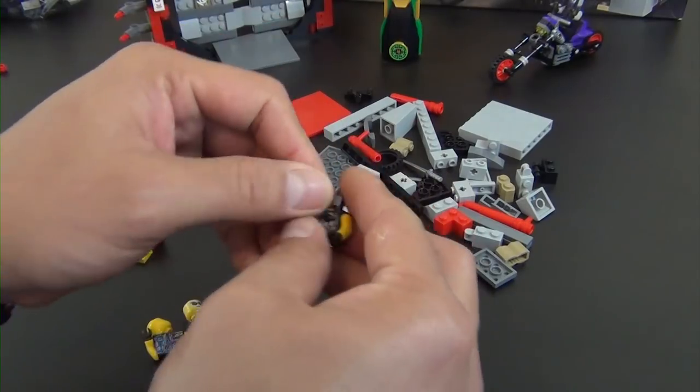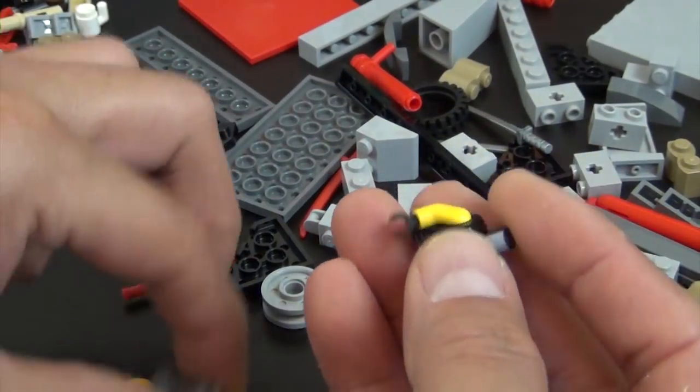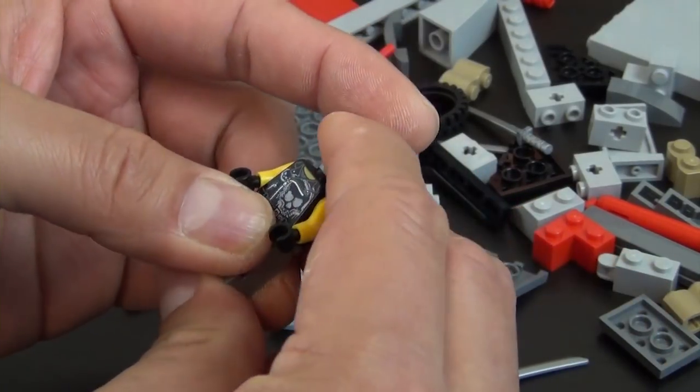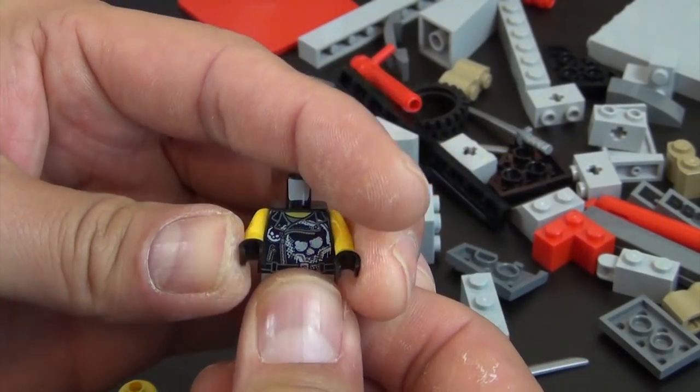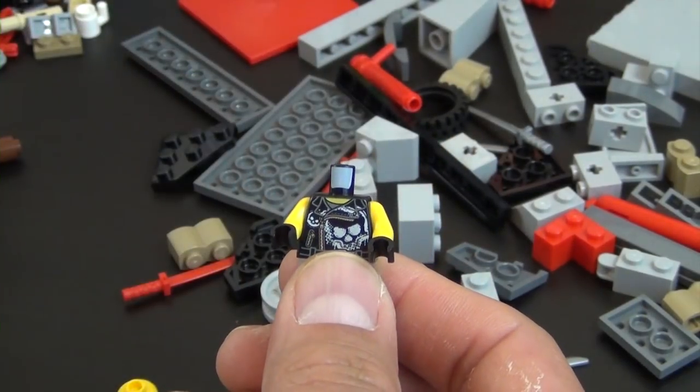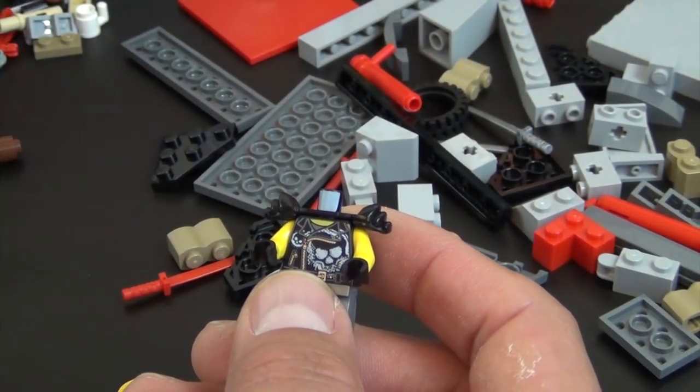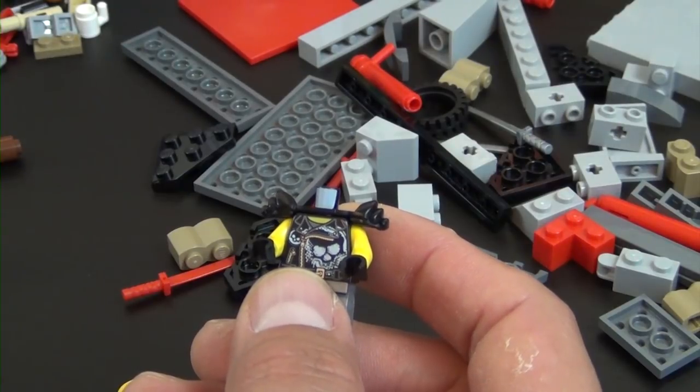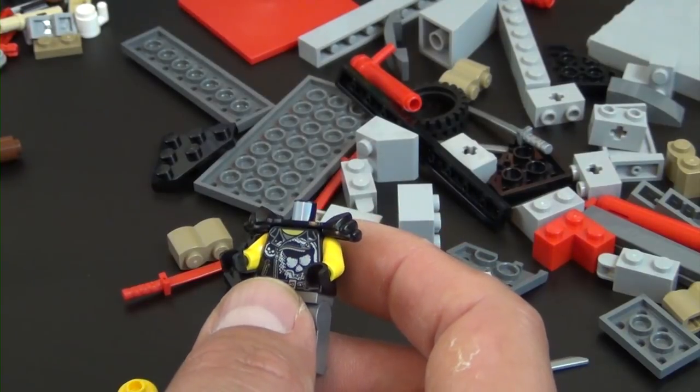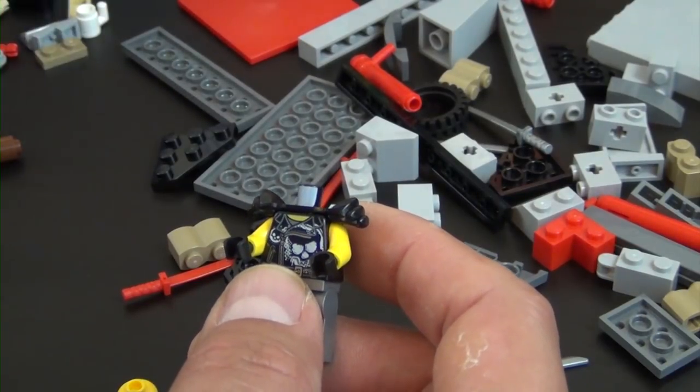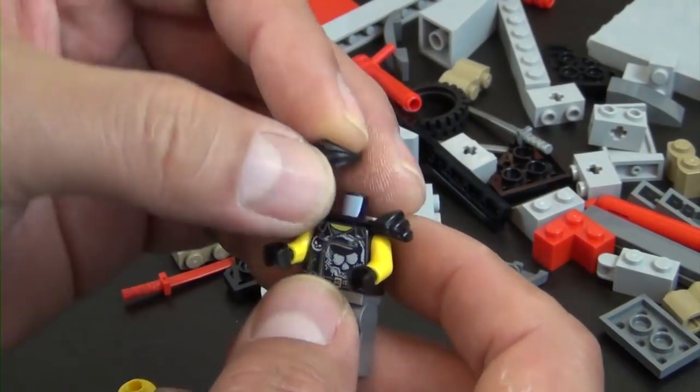Alright, looks like our first one is going to be Zane, kind of like biker Zane. He has some shoulder armor, a little mask piece. All these small parts and I can't find the one I'm looking for. There it is. It's so small, it's hiding under something.